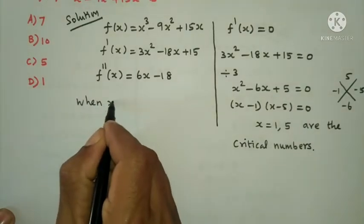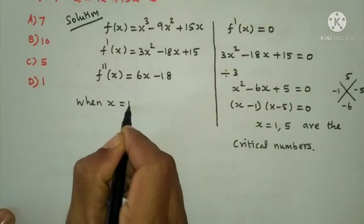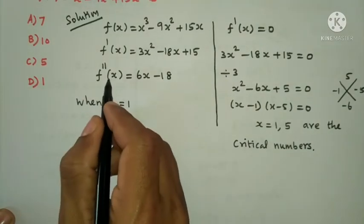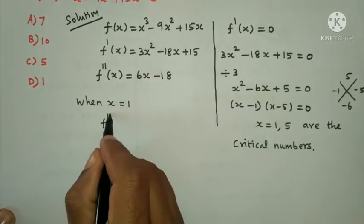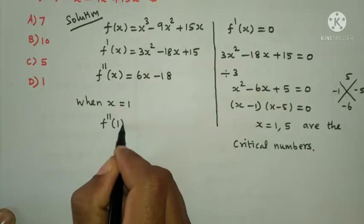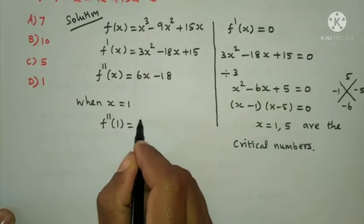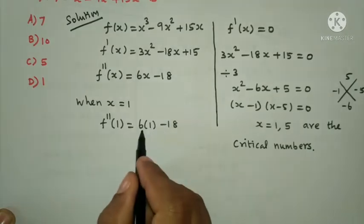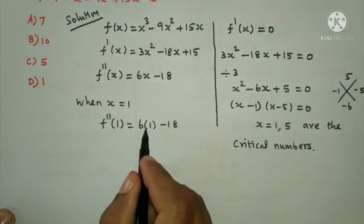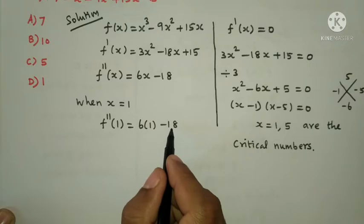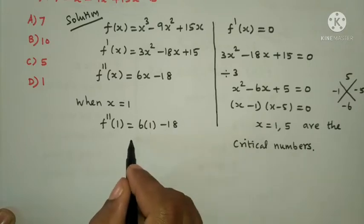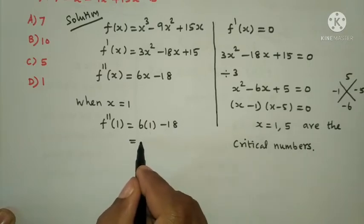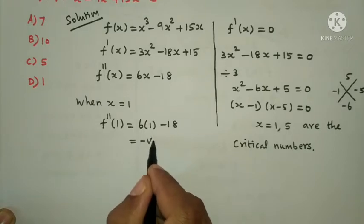When x equals 1, substituting into f''(x): f''(1) equals 6 times 1 minus 18 equals 6 minus 18 equals minus 12, which is negative.